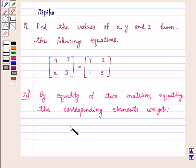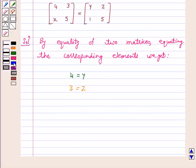we get 4 is equal to y, 3 is equal to z, and x is equal to 1.